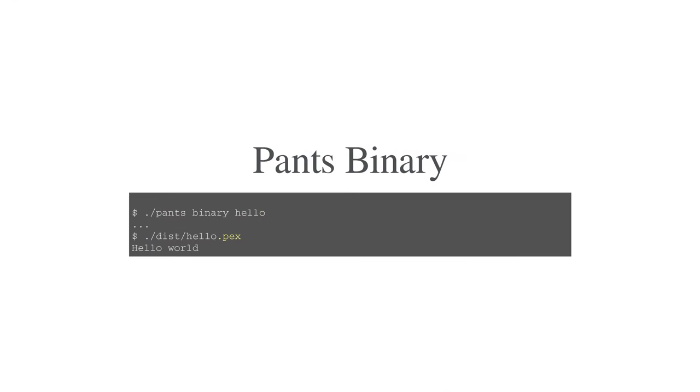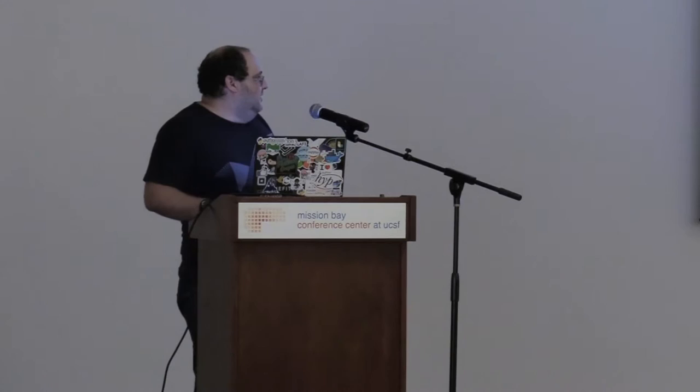The raison d'être of pants — the thing pants would not exist if it didn't do for our purposes — is it builds a binary. It was originally built to build Java, but let's assume we live in a decent universe where people build Python. So you say 'python_binary hello', you build it, it will put it in a directory called 'dist' that you probably want in your .gitignore, and if you run that PEX file, it will print hello world. That will be the file you put in your RPM, Docker container, or whatever your build artifact looks like.